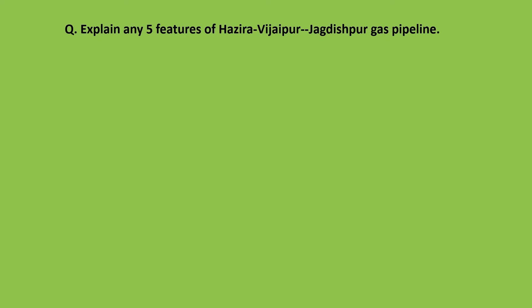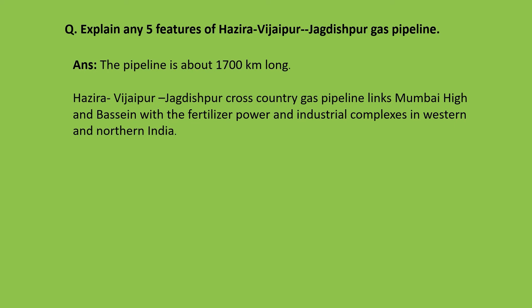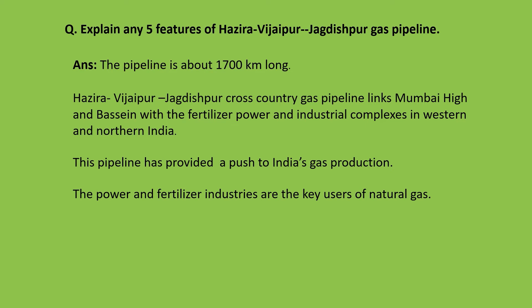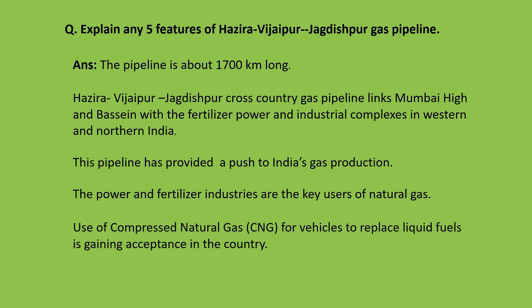Explain any five features of the Hazira-Vijaypur-Jagdishpur (HVJ) gas pipeline. The pipeline is about 1,700 km long. The HVJ cross-country gas pipeline links Mumbai High and Basein with fertilizer, power, and industrial complexes in western and northern India. This pipeline has provided a push to India's gas production. The power and fertilizer industries are the key users of natural gas. Use of Compressed Natural Gas (CNG) for vehicles to replace liquid fuel is gaining acceptance in the country.